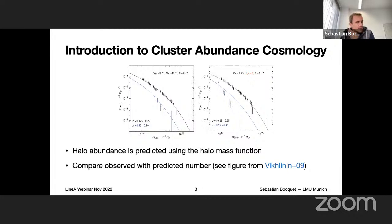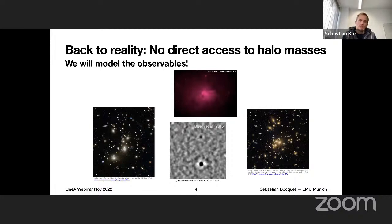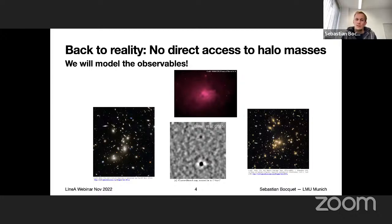The theory model for the number of massive halos — called the halo mass function — comes from numerical simulations, because we're looking at very non-linear scales in the matter density field. From this picture things look rather nice, but there's one big complication: the theory is the number of halos as a function of mass, yet nowhere in an observation does it say what the mass of these objects is. The key challenge is how we go from observations to relating them to a theory model — we have to actually model the observables.